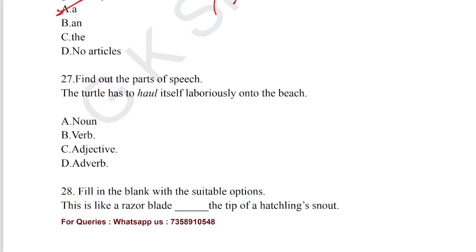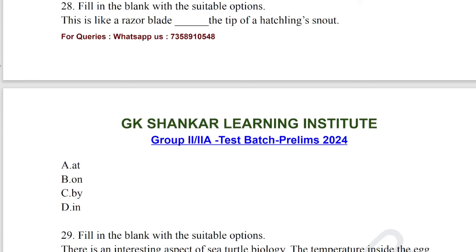Question number 27: find out the parts of speech. 'The turtle has to haul itself laboriously onto the bench.' The question is from the parts of speech section. 'Haul' here is a verb. Verb is the correct answer for question number 27. Question number 28: fill in the blank from the preposition section. 'This is like a razor blade at the tip of the hatching note.' When we use 'the tip of' or 'edge of', we must use the word 'at'. Option A, 'at', is the correct answer.